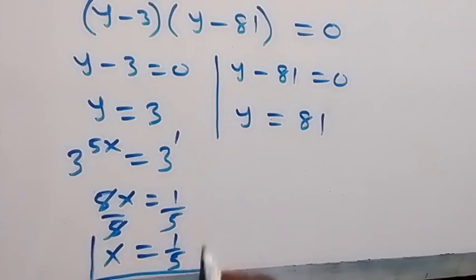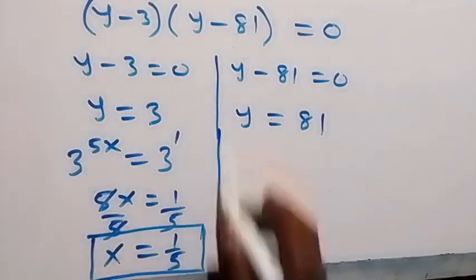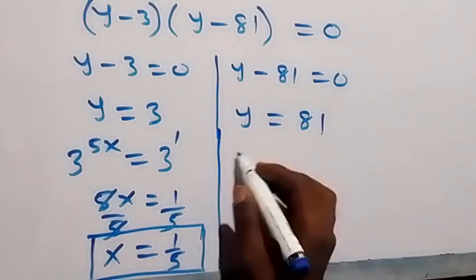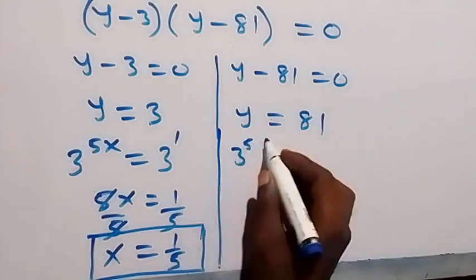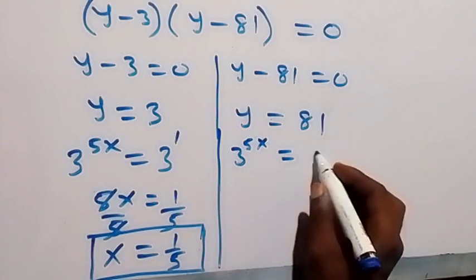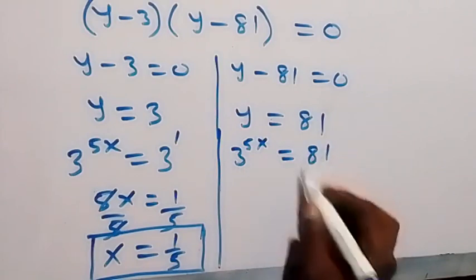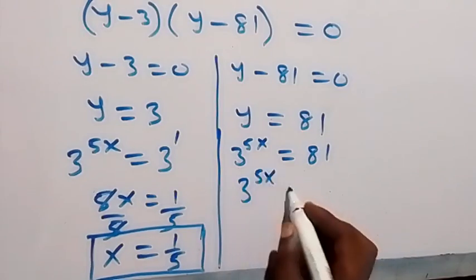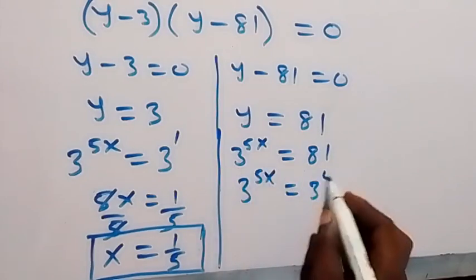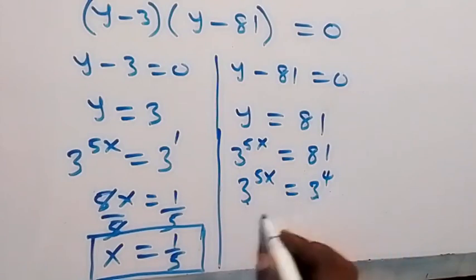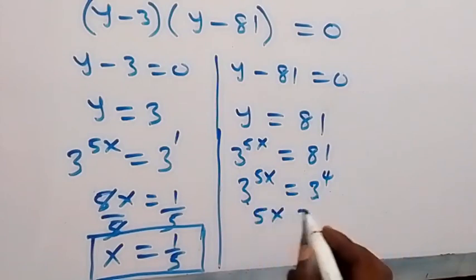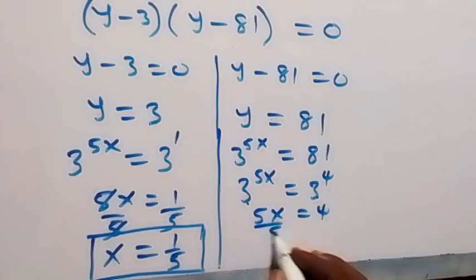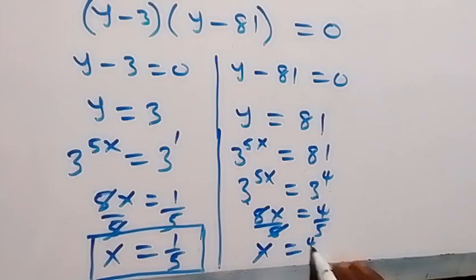On the other side, when y equals 81, we write 3 raised to power 5x equals 81, which is 3 raised to power 4. With equal bases, 5x equals 4, and dividing both sides by 5 gives x equals 4 over 5.